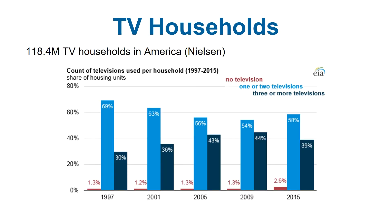According to Nielsen, there are about 118 million TV households in America. This trend graph shows the roughly five-year replacement cycle and how people cycle their old TV into another room. In 1997, almost 70% of people had one or two TVs; not as many had three or more. But you see the number of three-or-more-TV households rising from 2001 through 2009 as people buy new TVs and cycle the old ones to secondary rooms.